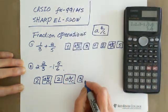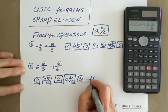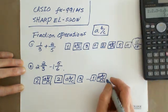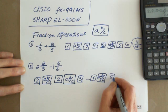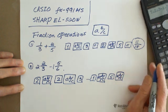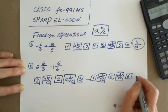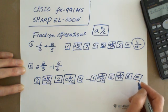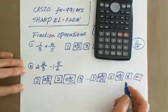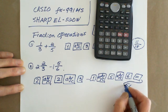and it gives you the answer: 5 over 6. This is the answer.